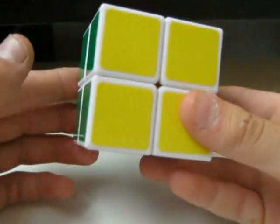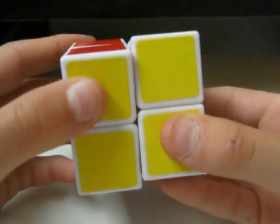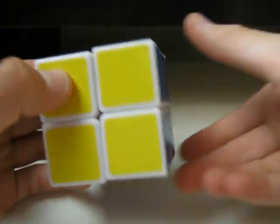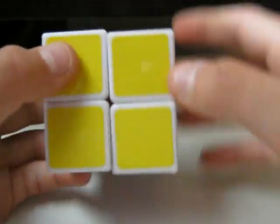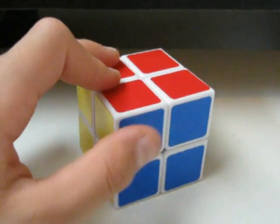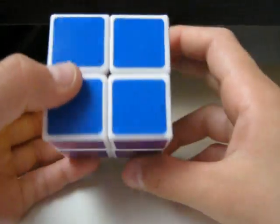So left inverted would be this, right inverted would actually be the exact opposite, because they're on opposite sides of each other. So you don't want to get that confused. Let's go ahead and scramble our cube.